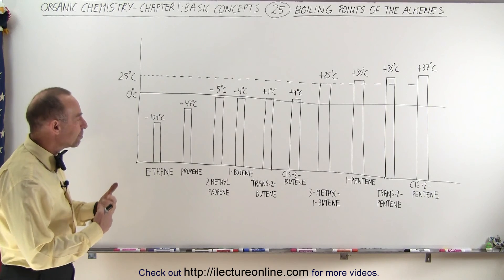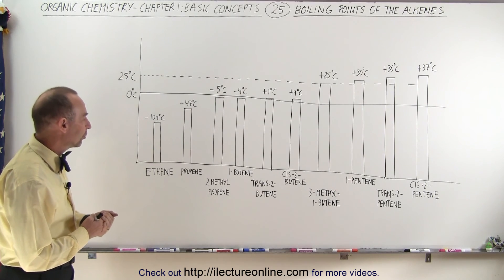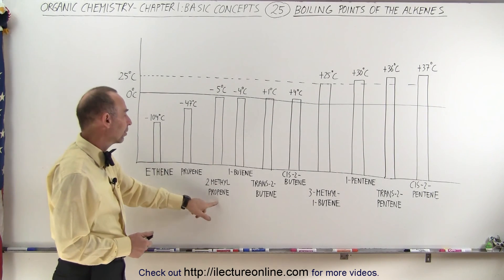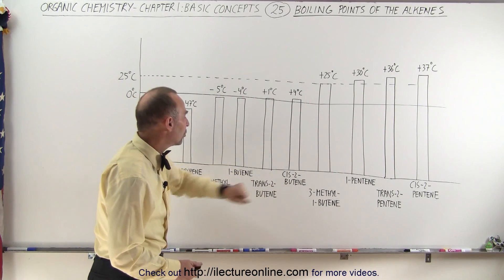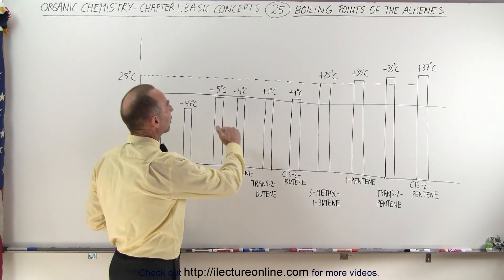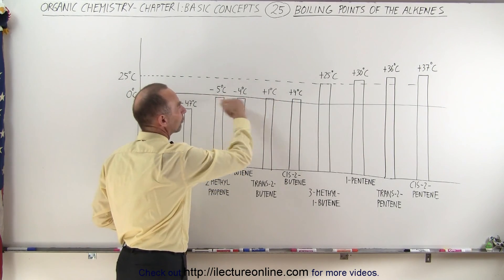but then as we get into more complex molecules, alkene molecules like 2-methylpropene, 1-butene, and trans and cis-2-butenes, you can see that now the boiling temperatures are very close to the freezing point.